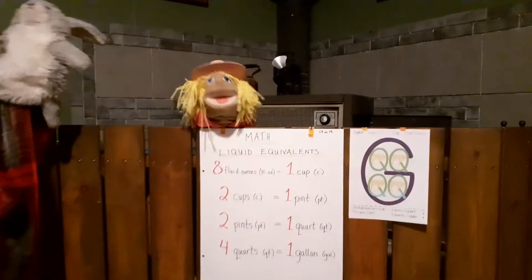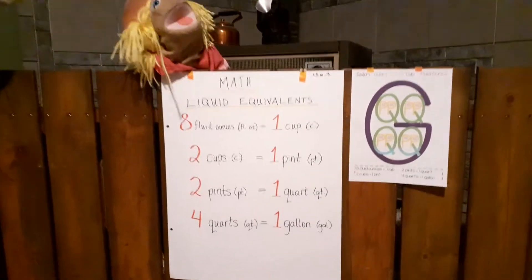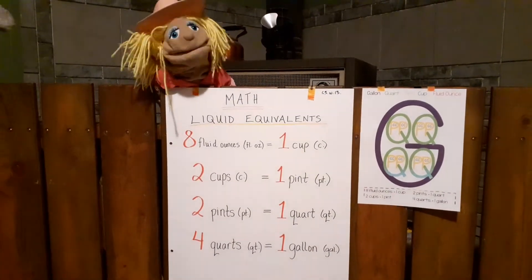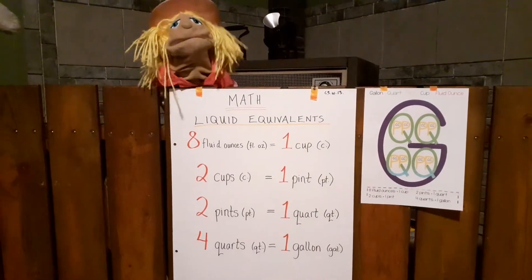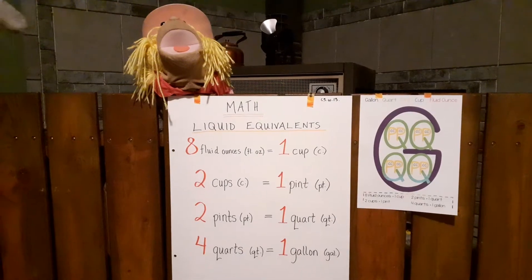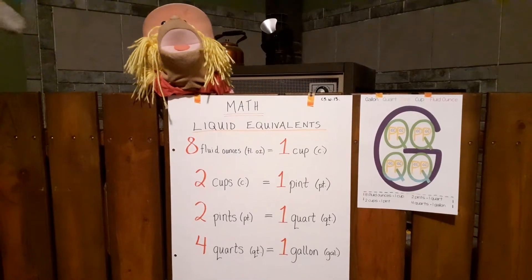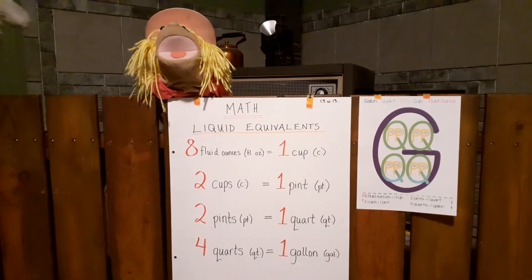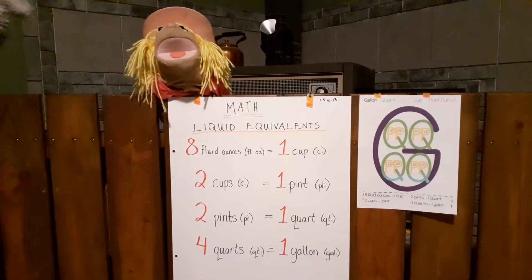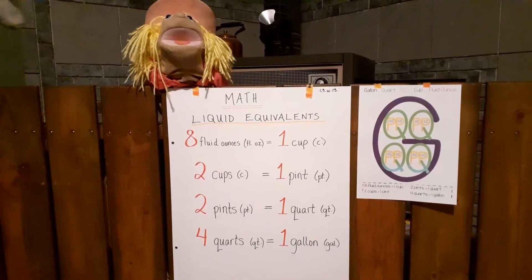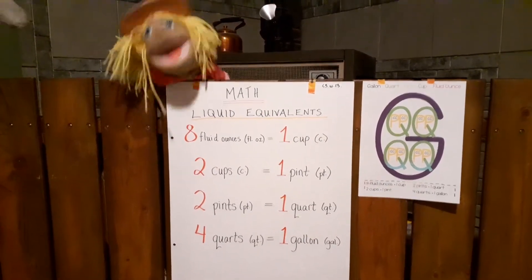Excellent. Eight fluid ounces equals one cup. Two cups equals one pint. Two pints equals one quart. And four quarts equals one gallon.